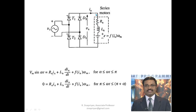We have taken a half-controlled rectifier — two thyristors and two diodes. Kindly check my previous videos on the half-controlled rectifier fed separately excited DC motor. Here only the field winding is connected in series, that's the only difference. During the positive half cycle, T1 and D1 will be forward biased. During the negative half cycle, T2 and D2 will be forward biased.